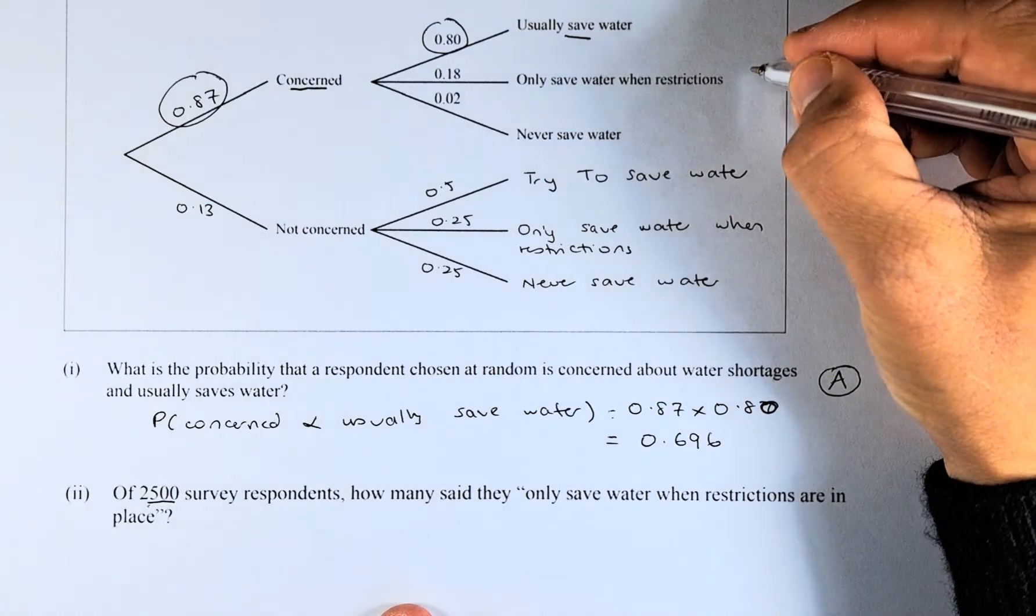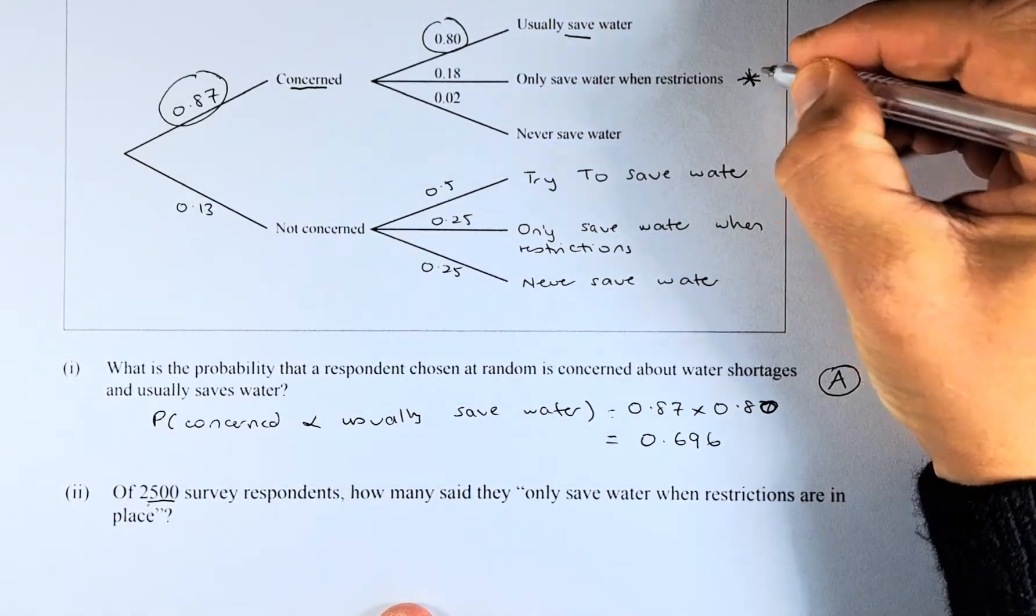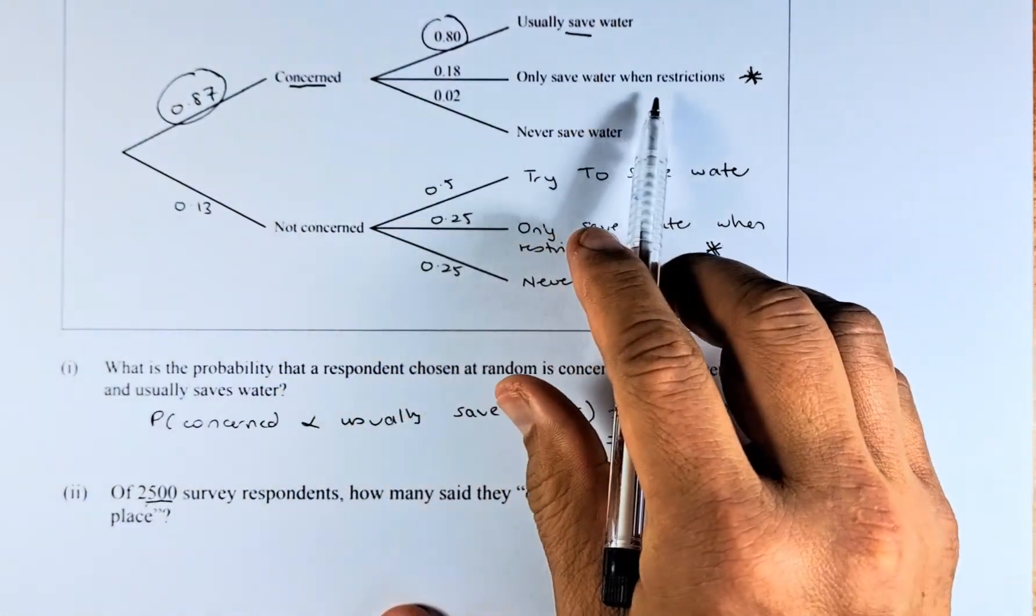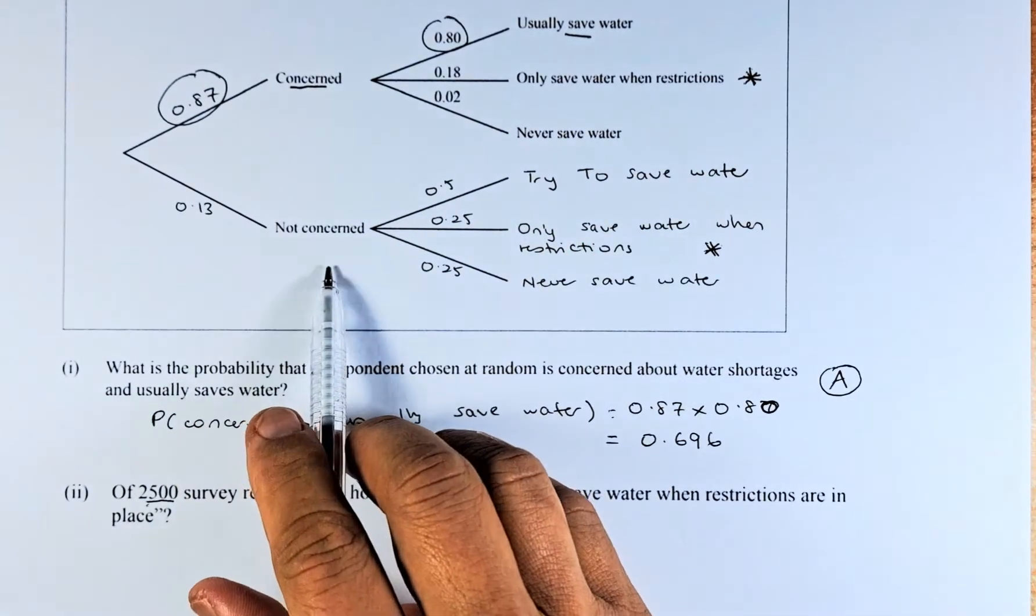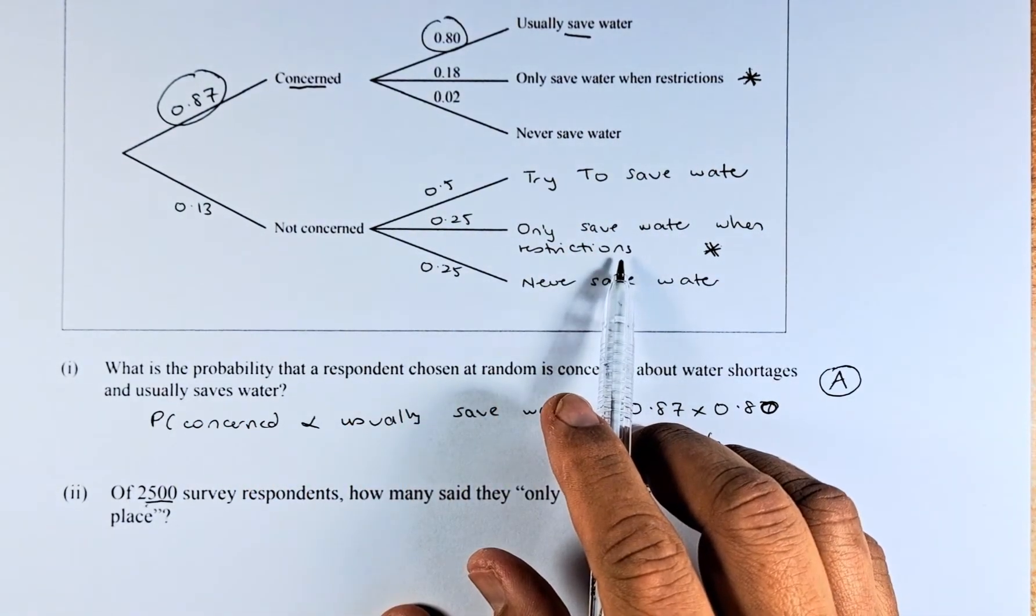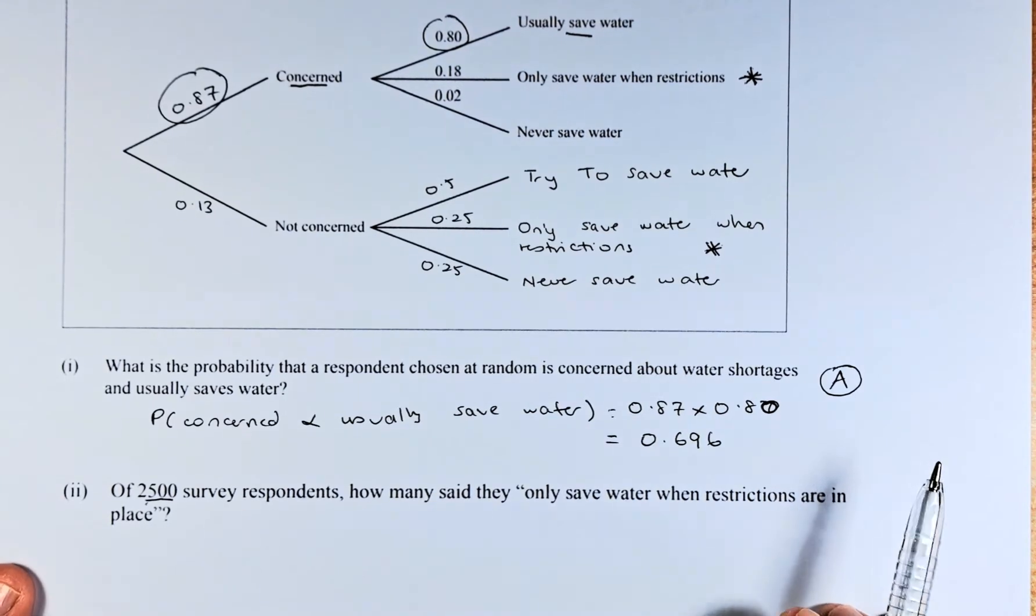There are only 2 possibilities here and here. So, they are concerned and only save water when restrictions, and not concerned when only save water when they are restrictions. So, there are 2 possible.